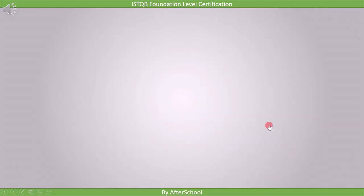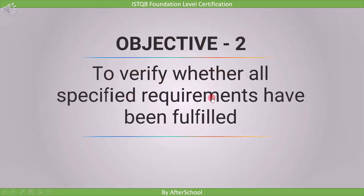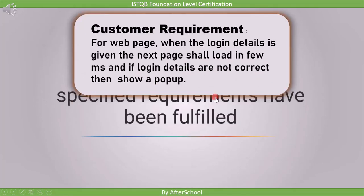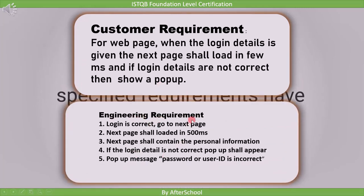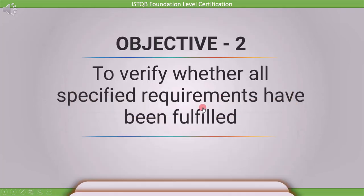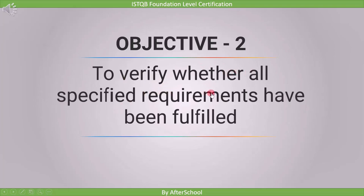The second objective is to verify whether all specified requirements have been fulfilled. We know the customer requirement. Now we need to see if these requirements are fulfilled in the engineering requirement. After analyzing and asking questions, we get the engineering requirement, which includes: first, if login is correct, go to next page; second, next page shall load in 500 milliseconds; third, next page shall contain personal information; fourth, if login details are not correct, a pop-up shall appear; fifth, the pop-up message shall say 'password or user ID is incorrect.' In each stage, we have to verify whether all specified requirements have been fulfilled.